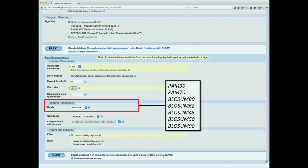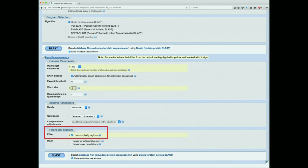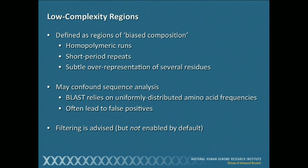You can see the selection of matrices and everything that's available to you here. Underneath, you can change the gap costs as well — if you want to make it less gap-prone, you can increase the penalties; if you want to be more permissive, you can decrease the penalties. Filters: we can filter out things called low-complexity regions, which are regions of biased composition. BLAST depends on sequences being of relatively uniform composition, but occasionally you'll see proteins or nucleotide sequences where there are runs of a single amino acid or a particular nucleotide, and that ends up messing BLAST up, often leading to false positives — things like homopolymeric runs, short period repeats, and the subtle over-representation of several residues. I would advise that you filter them out, but it's not enabled by default.